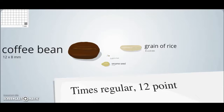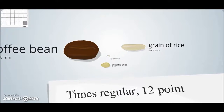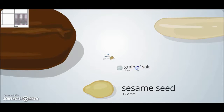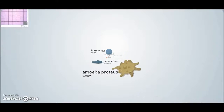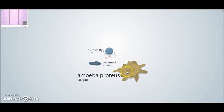Now we'll be able to understand the relative sizes of viruses, bacteria, and parasites. We start to see here the size of a parasite called amoeba, a parasite of human beings and other animals, and we see the size of that amoeba with respect to a grain of salt. We observe this parasite with respect to a skin cell, a spermatozoid, or an ovule of human beings.